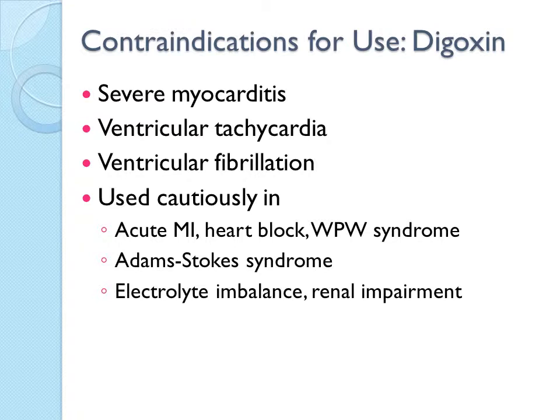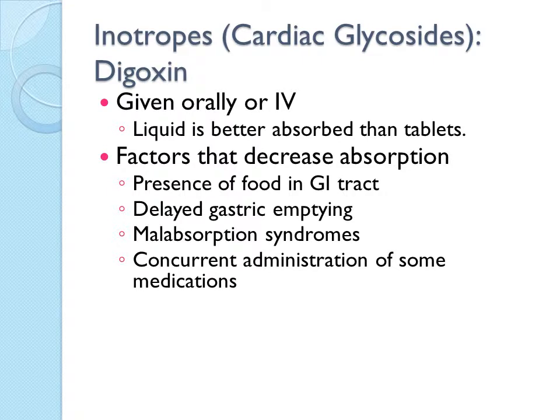A patient with renal impairment requires an alteration in dosage and cautious administration. Factors that decrease the absorption of digoxin include the presence of food in the gastrointestinal tract, malabsorption syndromes, and the concurrent administration of antacids or cholestyramine. Digoxin administration should take place at least one hour before an antacid. When digoxin is discontinued, it takes approximately one week for the drug to be eliminated from the body.